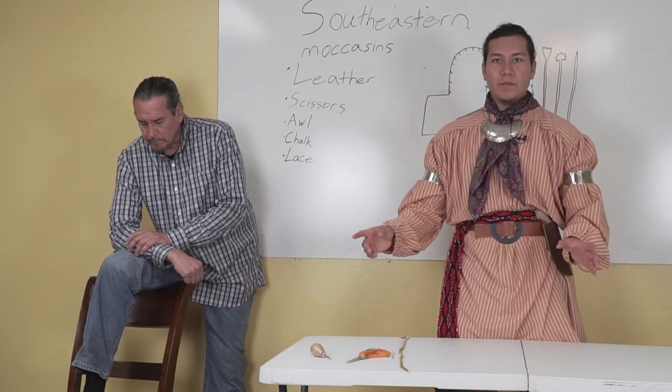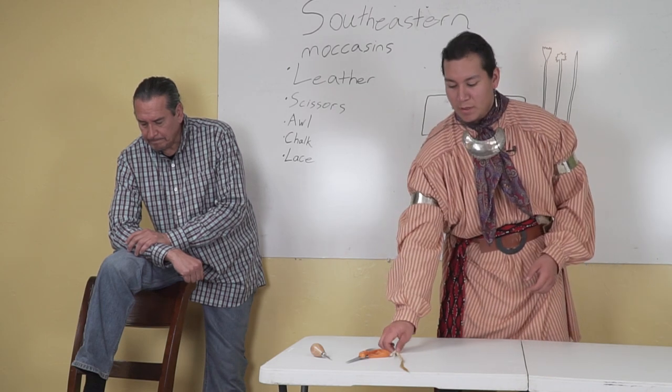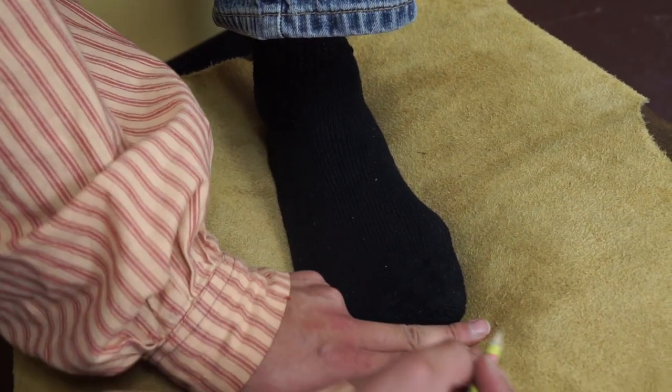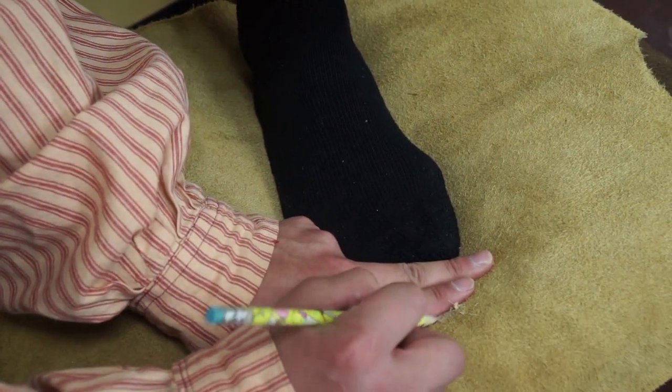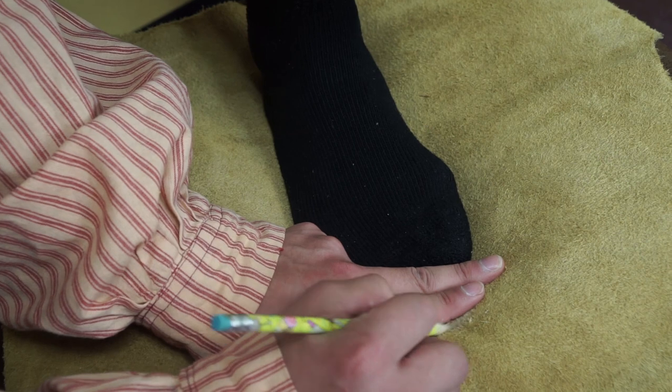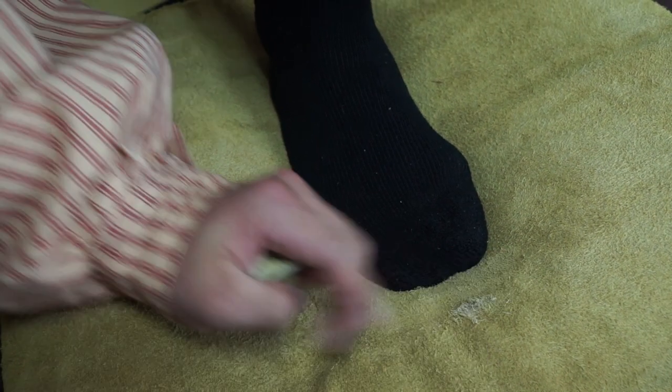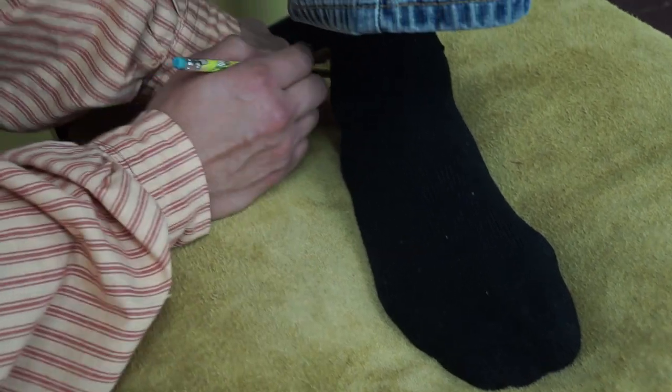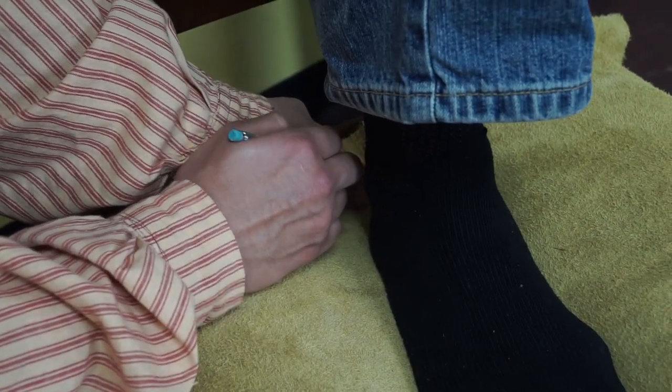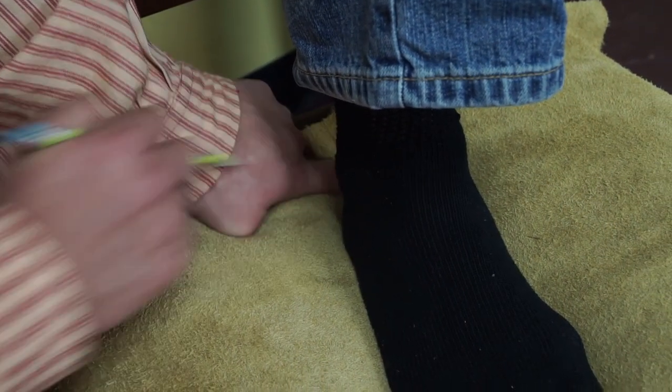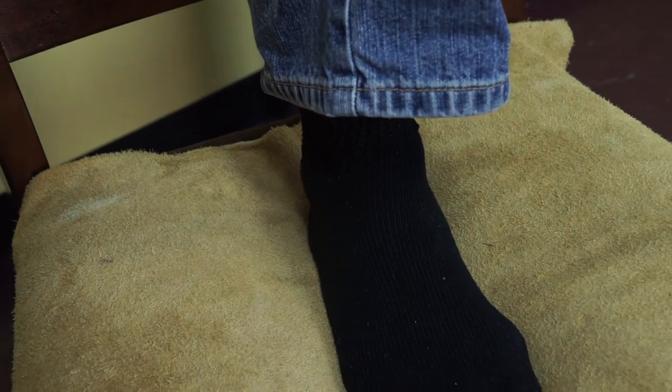And so now we're going to use my assistant's foot for the pattern. So we're going to use our chalk at this point. For the pattern, we'll use two fingers on the front. You can use a pencil as well, just don't put it too dark, it's hard to get out. You'll have one finger in the back. And this is where we'll have our lace come in.